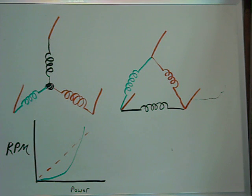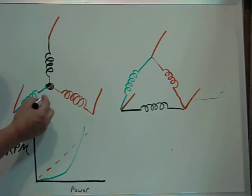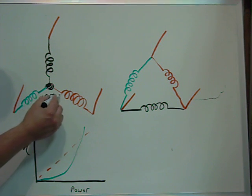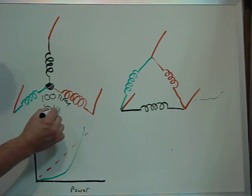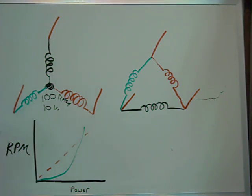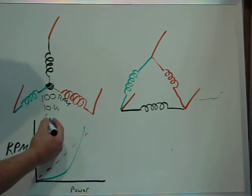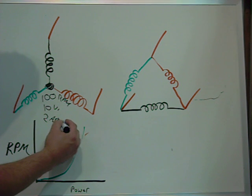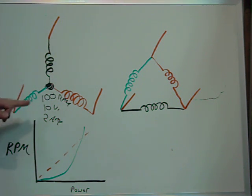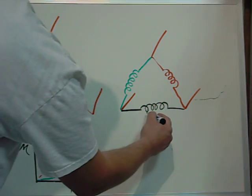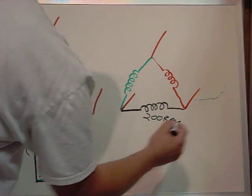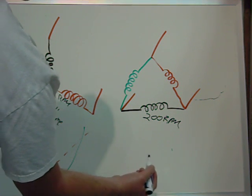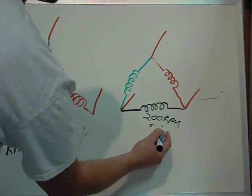So essentially, what that boils down to, let's just say this guy over here is at 100 RPM. Okay? And this thing is giving you 10 volts. And let's just say, to put an amperage on there, you're getting two amps. Okay? And if you can change from a Y connection to a delta connection, your RPM will be allowed to go up to 200 RPM.